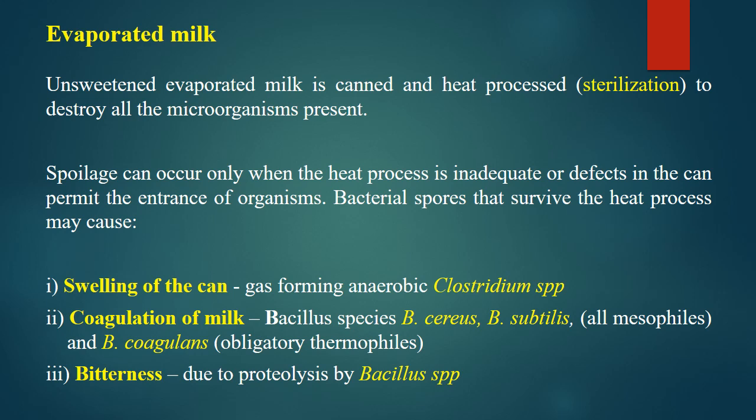Three types of spoilage can happen in evaporated milk. First is swelling of the can, caused by gas-forming anaerobic Clostridium species. Second is coagulation of milk, caused by Bacillus species such as Bacillus cereus or Bacillus subtilis — mesophilic bacteria — and Bacillus coagulans, which is an obligatory thermophile. The third type of spoilage is bitterness, caused by proteolysis as mentioned at the beginning, and it is caused by Bacillus species.